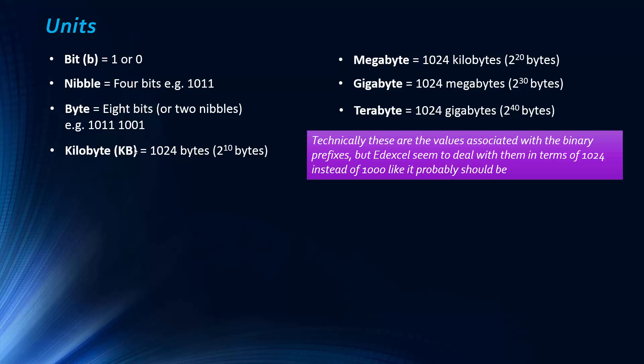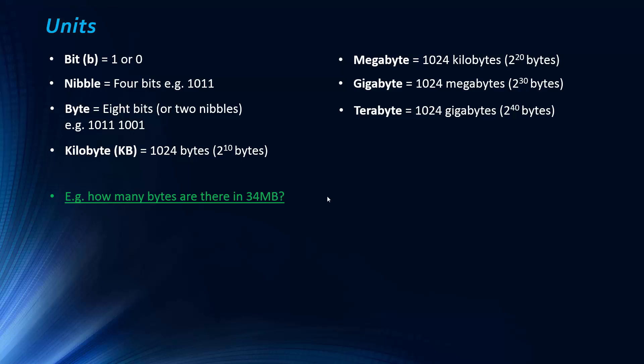To try to reduce this, people tried to introduce binary prefixes, like kibibyte would be this. But for whatever reason, Edexcel seems to deal with it in terms of 1024 which, to be fair, is sort of the majority use, but it should really be 1000. That's a bit of a caveat, we'll ignore that.